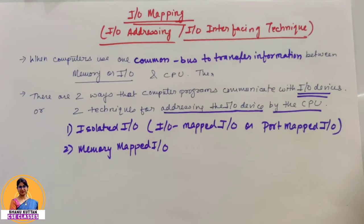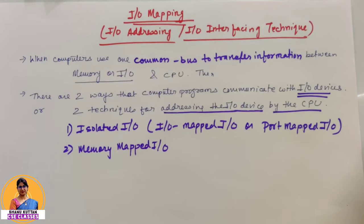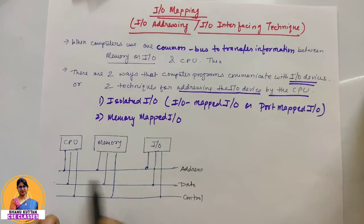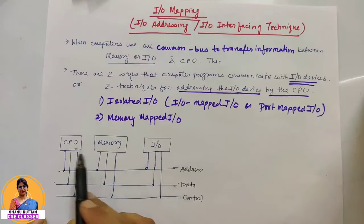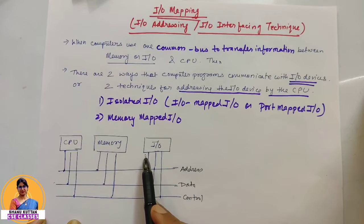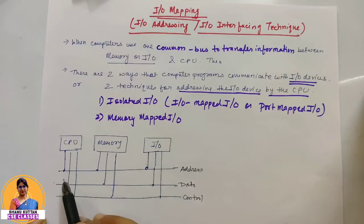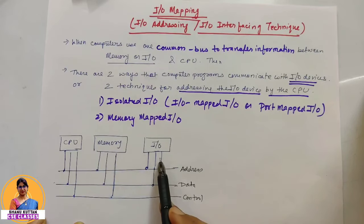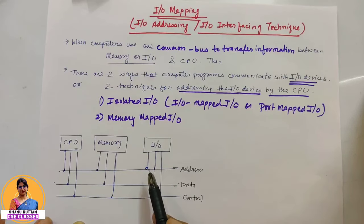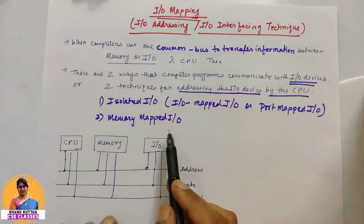There are two techniques for addressing the I/O device by the CPU. One is isolated I/O, and the other is memory mapped I/O — also called I/O mapped I/O or port mapped I/O. If our computer has a common bus system, the CPU accesses both memory and I/O devices from the same bus. So how will it differentiate whether an address on the control line refers to memory or I/O?